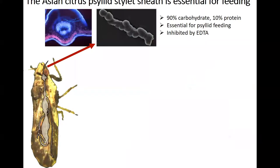The psyllid is a hemipteran insect, much like aphids or whiteflies, and when it's feeding on citrus plants, it uses its piercing-sucking mouthparts called a stylet to pierce into citrus tissue. Here you'll see a cross-section of a citrus leaf stained to show protein, and you'll see these blue squiggles. This is evidence of where a psyllid has fed, and it uses its stylet to probe until it finds a phloem element.